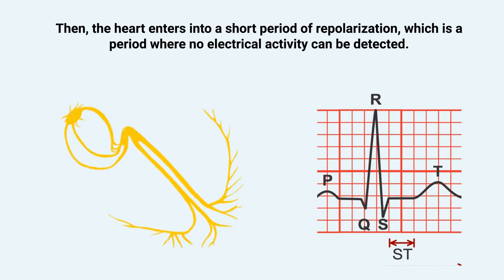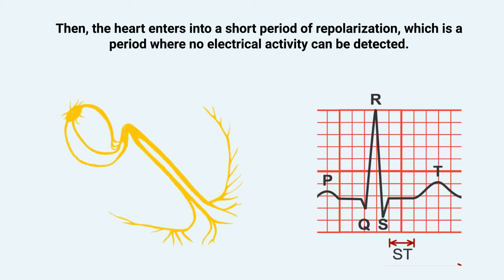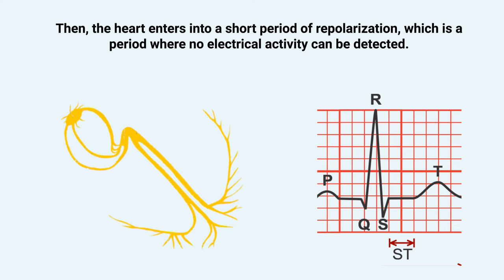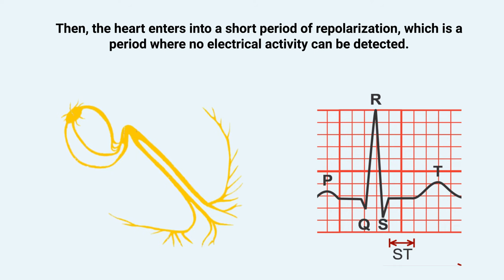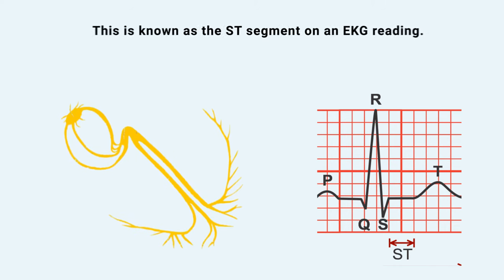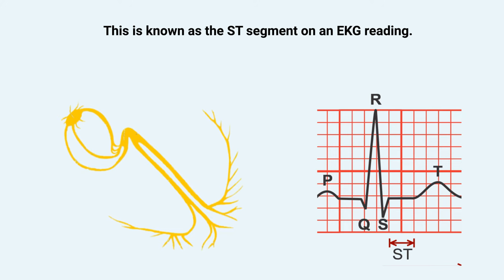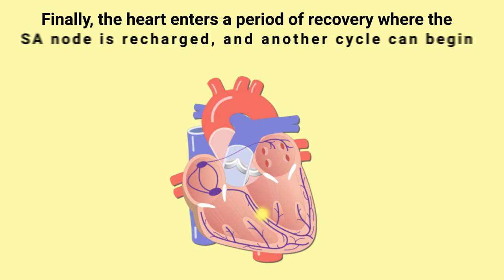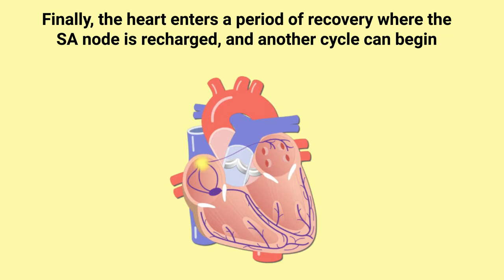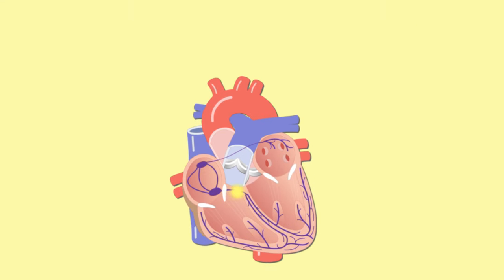The heart then enters a short period of repolarization — a period where no electrical activity can be detected — known as the ST segment on the EKG reading. Finally, the heart enters a period of recovery where the SA node is recharged and another cycle can begin.